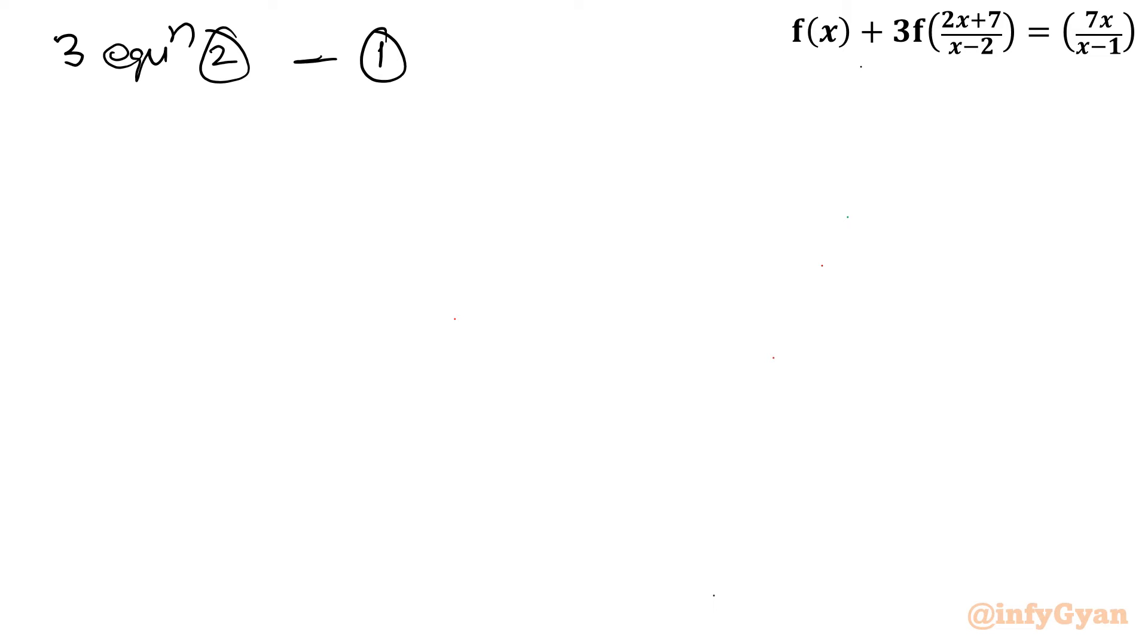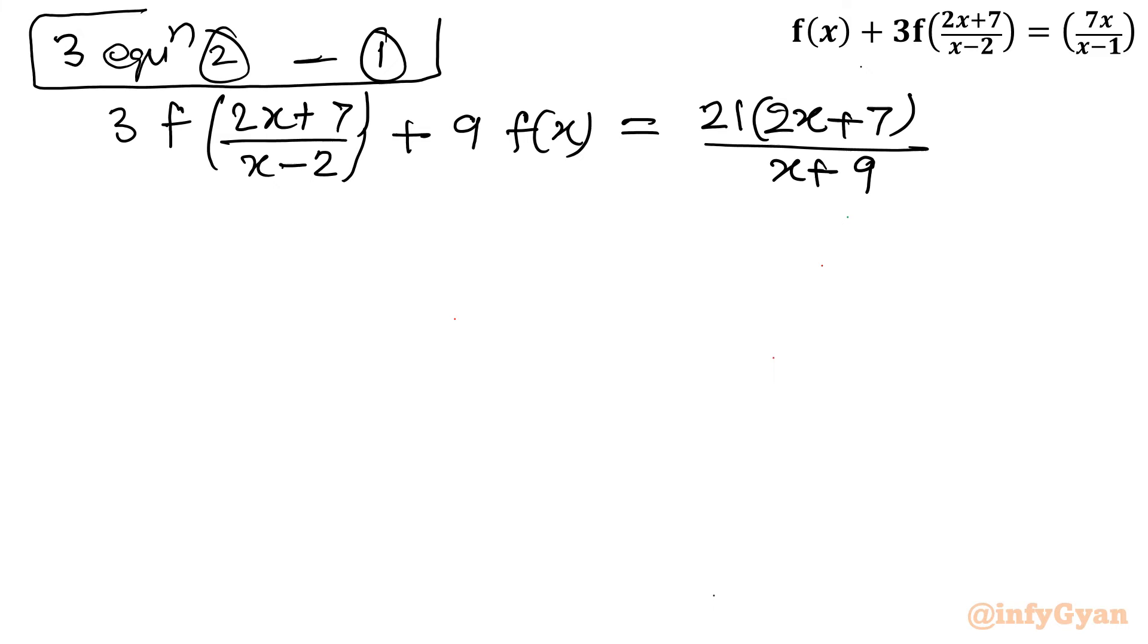Let me show you: 3f((2x+7)/(x-2)) + 9f(x) = 21(2x+7)/(x+9). After multiplying with 3, equation 2 will become this. Now I will write this minus 1, the original equation. Once I take away, on the left hand side, 8f(x) will be left. 9f(x) minus f(x), this term will be over. I will get 8f(x) in the LHS.